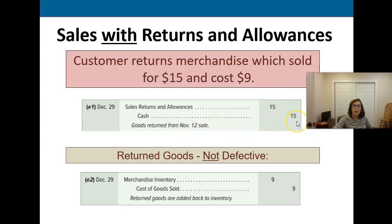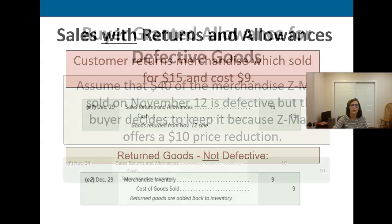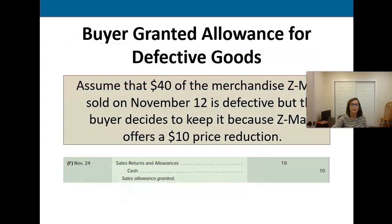So we'll give them back their fifteen dollars and debit sales returns and allowances. Meanwhile we're going to debit merchandise inventory to show that the item is going back into our inventory, and then we credit cost of goods sold so that we don't subtract that from our income, because we didn't actually sell it — we reversed the sale.